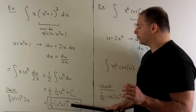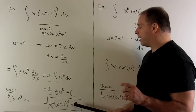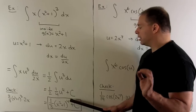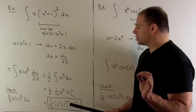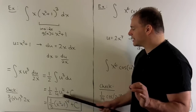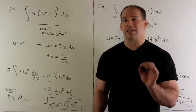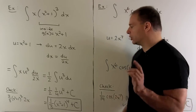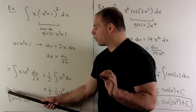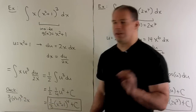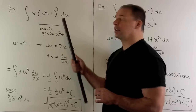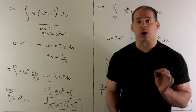Now of course we check that by taking the derivative. Using the chain rule, the 4 comes down, the exponent goes to 3, and then we take the derivative of the inside, giving a 2x. The 4 and the 2 cancel with the 8, and I'm left with x times x squared plus 1 cubed — that's my integrand. So our work checks out.